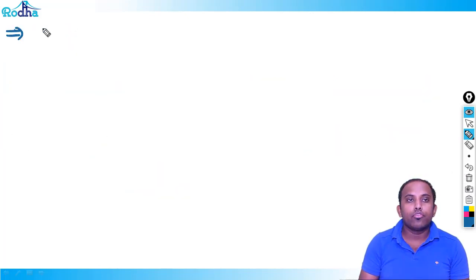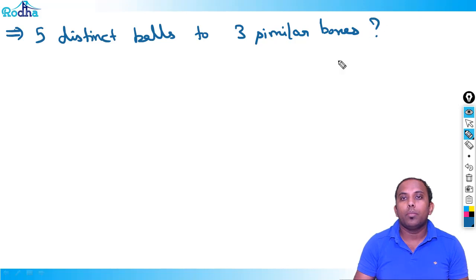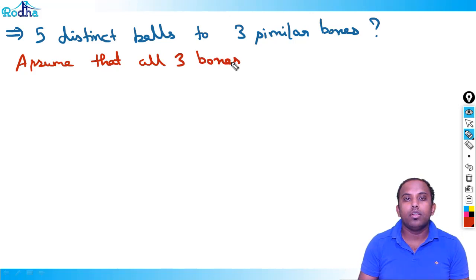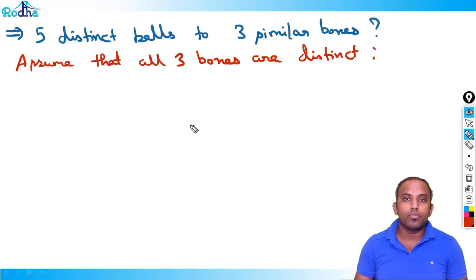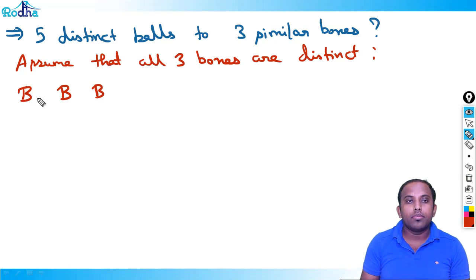Five distinct balls to three similar boxes — how many ways? Assume that all three boxes are distinct for now. If all three boxes are distinct, I label them b1, b2, b3. How many cases can we form? The cases are: 5,0,0 then 4,1,0 then 3,2,0 then 3,1,1 then 2,2,1.